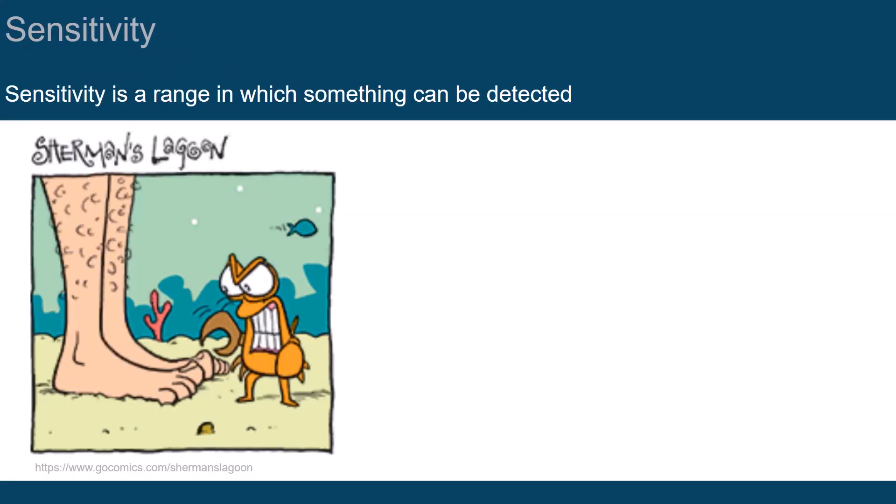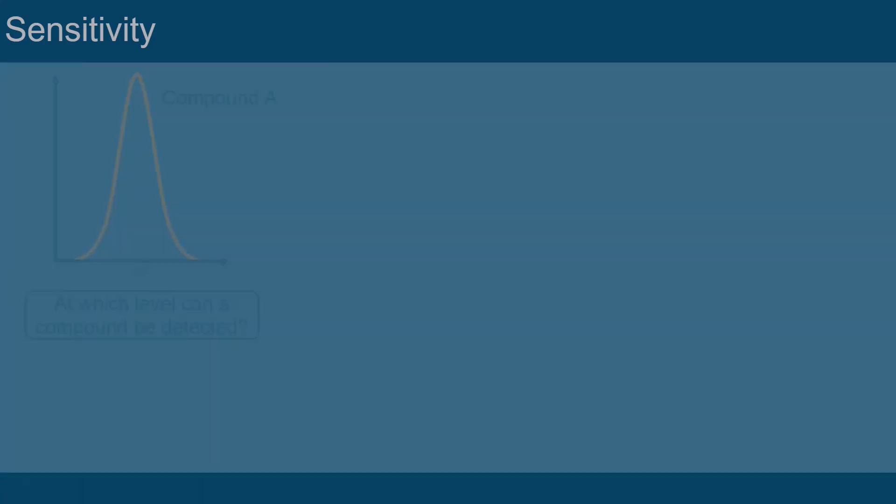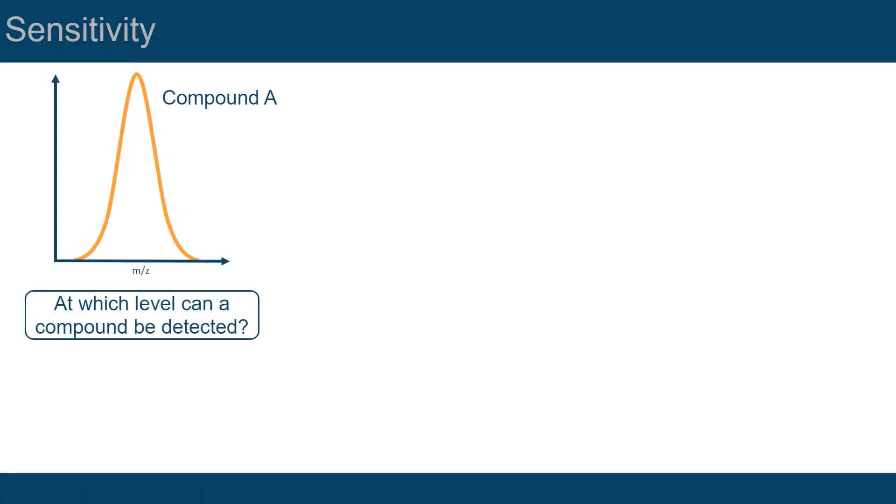The term sensitivity is used in many different contexts and usually refers to a range in which something can be detected, such as touch or pain. In mass spectrometry, sensitivity is a parameter that specifies the level at which the instrument can detect a compound. This level depends on several factors,